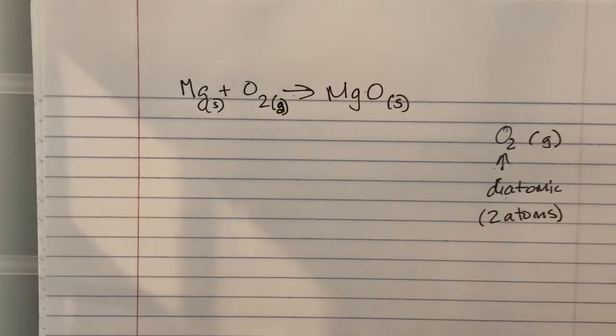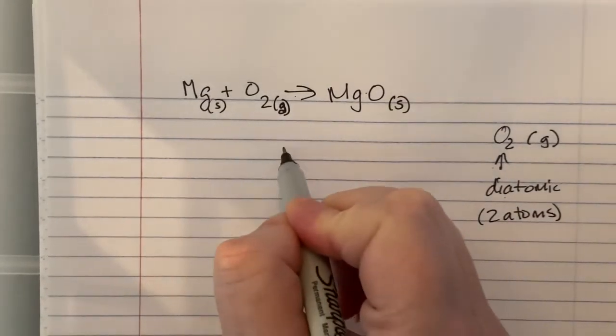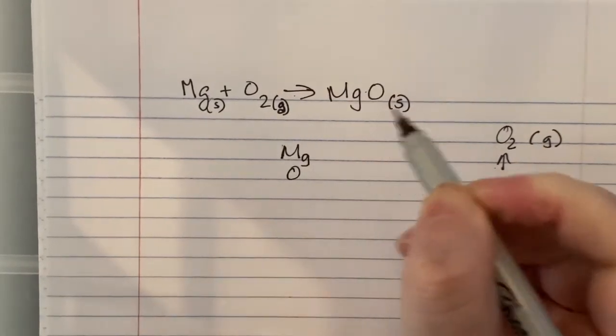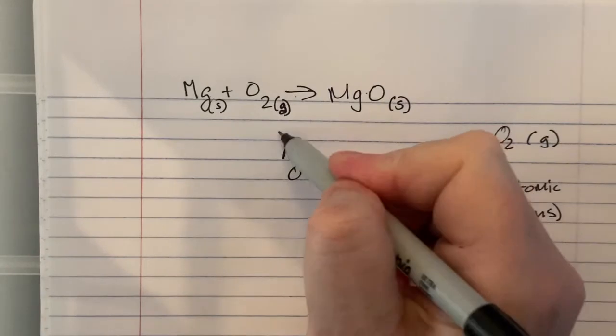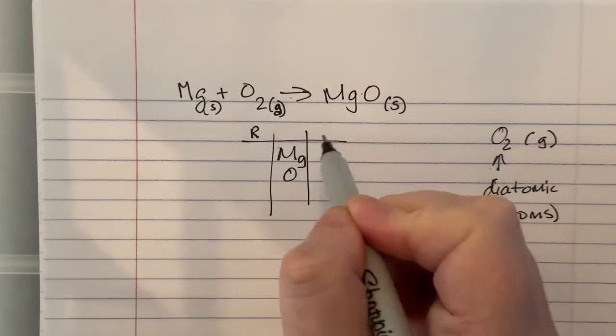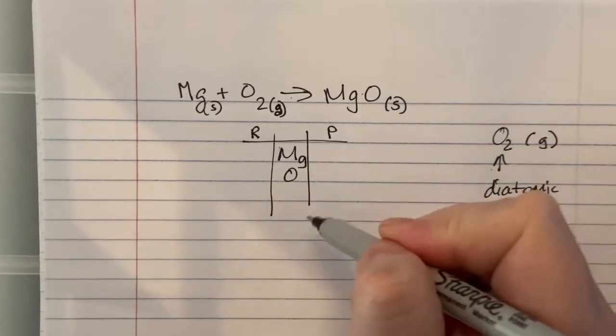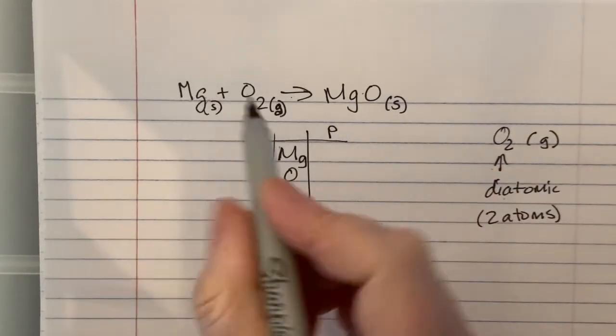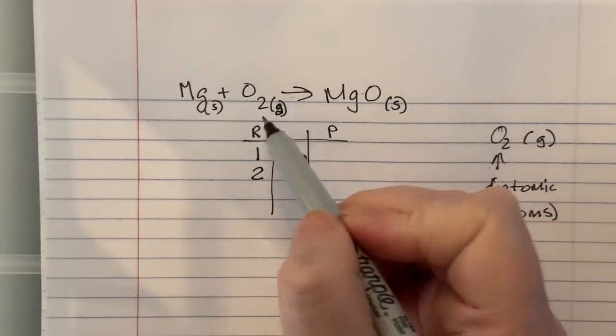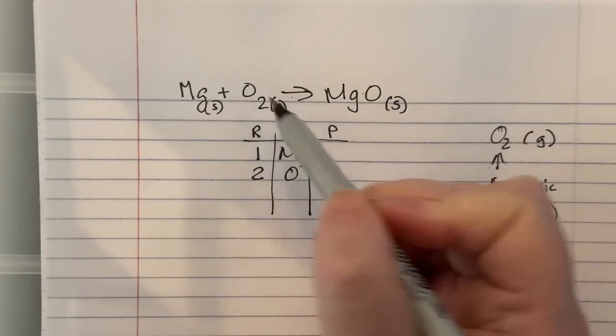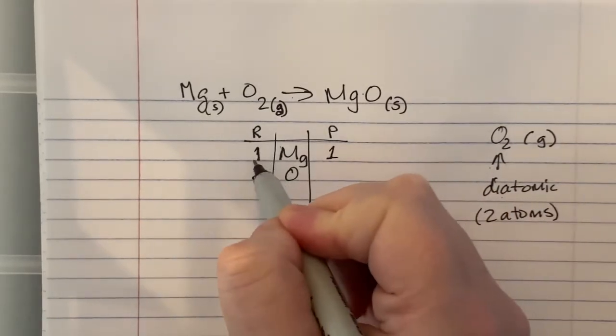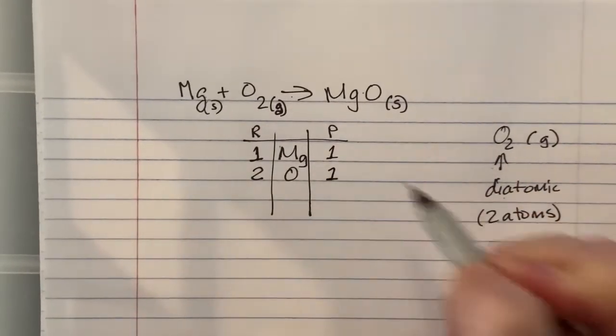We have magnesium and oxygen as the only two elements. We have reactants, which are ingredients, and products are what we're putting together. There's one magnesium on the left, two oxygens on the left - remember that two refers to the oxygen. There's one magnesium on the right and one oxygen on the right.